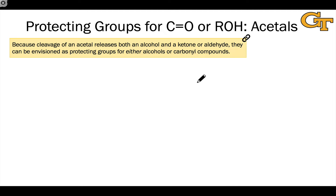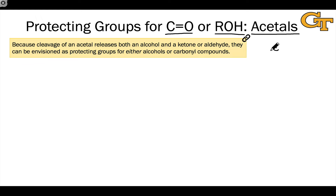We're going to touch on a functional group that is a very important protecting group for both ketones and aldehydes and alcohols, and that's the acetal functional group. The acetal is a functional group in which we have a central saturated or tetrahedral carbon linked to two R groups. That central carbon is also linked to two oxygen atoms through single bonds.